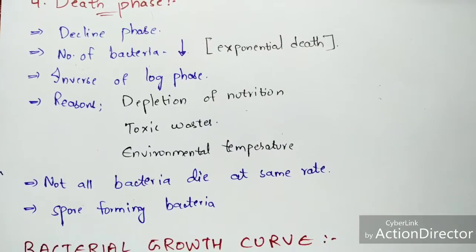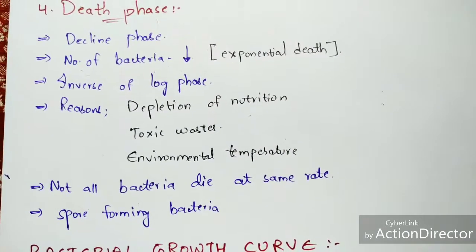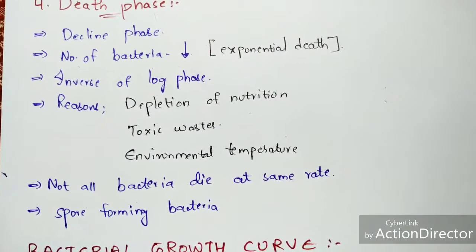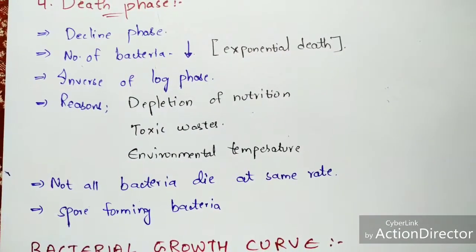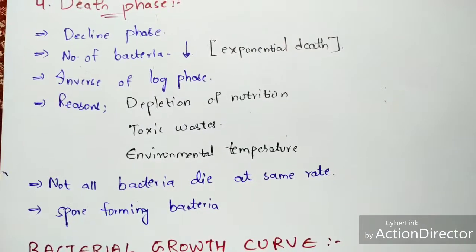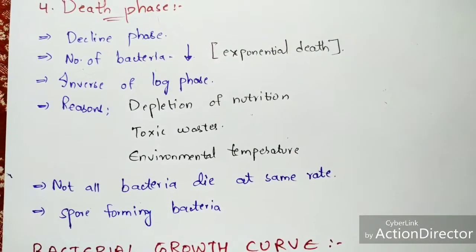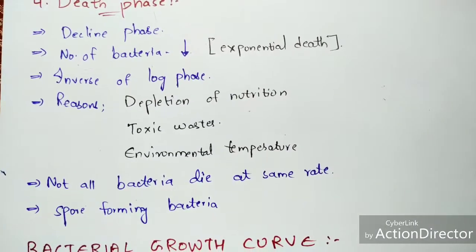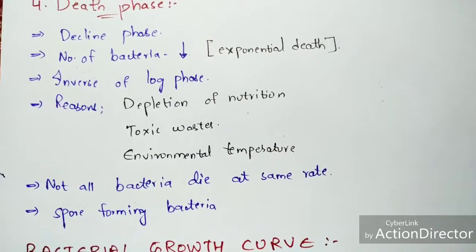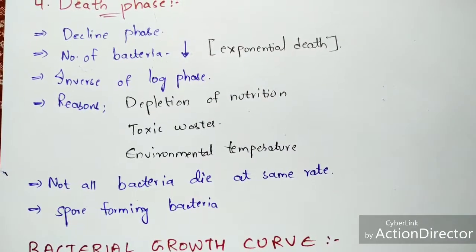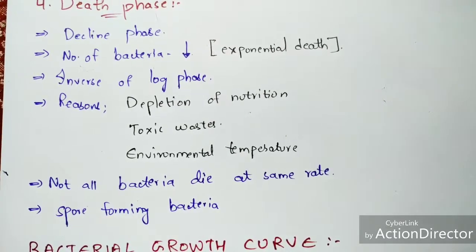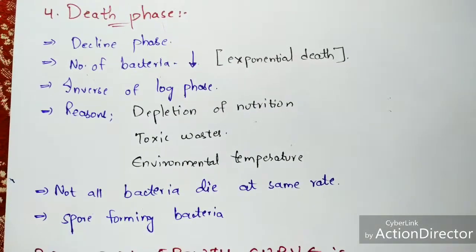Not all bacteria die at the same rate — some die very fast while others die slowly. Bacteria that die slowly attain a longer period of survival. Spore-forming bacteria are the best example of long-survival bacteria, as their spores allow them to persist through harsh conditions. This concludes the death phase.